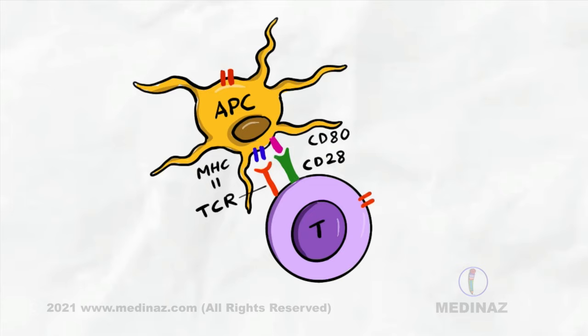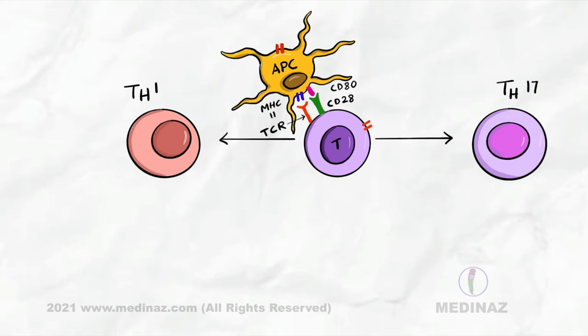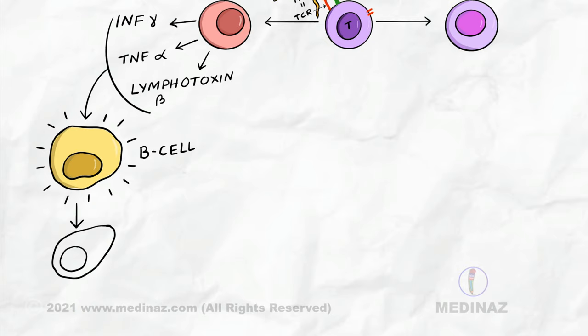Synovial CD4-positive T cells differentiate into T-helper-1 and T-helper-17 cells. They have distinctive cytokine profile. CD4-positive T-helper cells secrete interferon-gamma, TNF-alpha and lymphotoxin-beta, which activate B cells. B cells then differentiate into autoantibody-producing plasma cells.